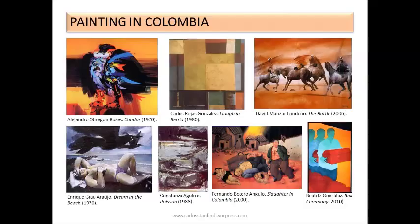Dream on the Beach is considered an icon of surrealism in Colombia. In 1980, Carlos Obregón Rosas painted his work named Island in Berrio, which is treated as a symbol of minimalist art. The artist Constanza Obregón painted in 1988 a work named Poisson, which in French means fish. One of my favorite artists, Fernando Botero Angulo, the most famous Colombian artist, painted his work Slaughter in Colombia in the year 2000, which reflects the violence that has plagued my country for over half a century.